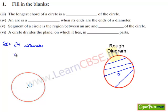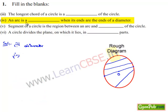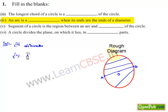Moving on to the fourth bit: an arc whose ends are the ends of the diameter. Let us consider the figure. If we name the points at the ends of the chord passing through the center as A and B, it divides the circle into two equal parts. Therefore, the arc formed by the chord passing through the center is nothing but a semicircle.